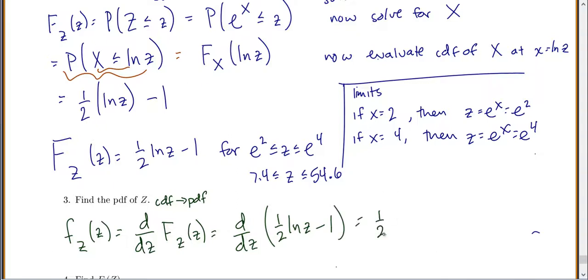So the 1/2 stays there. Derivative of natural log of z is 1 over z. Derivative of negative 1 is just 0. So we just get 1 over 2z.